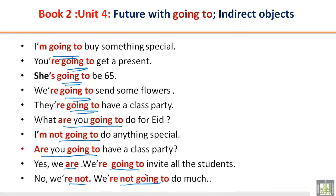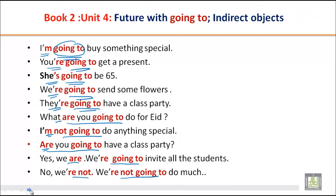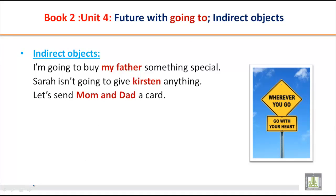In all these sentences you can see we have used 'going to' to tell you about the future. Remember, since it is simple future, we have the same rule: I am, you are, she is, we are, they are. When we ask a question, the auxiliary comes at the beginning. So we use 'going to' to express meaning about the future.